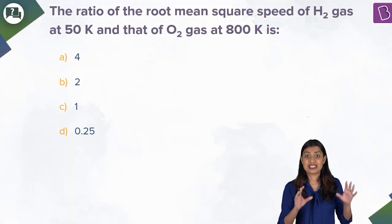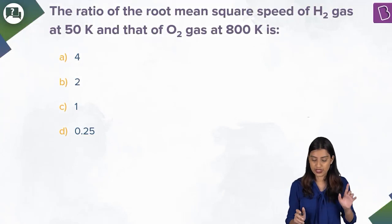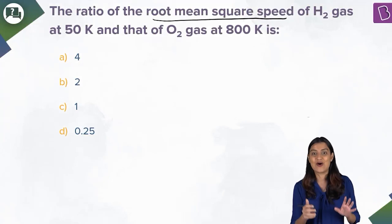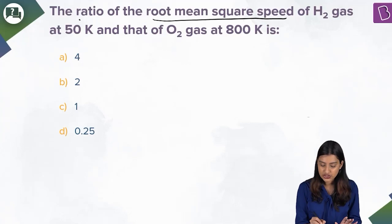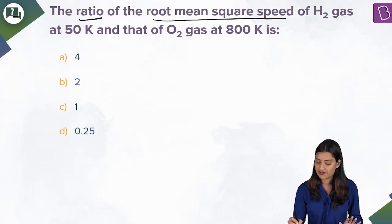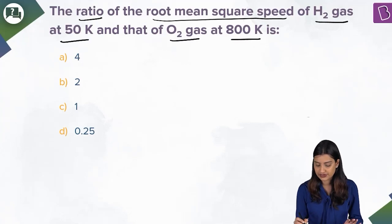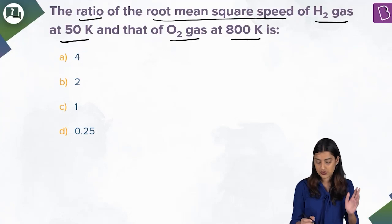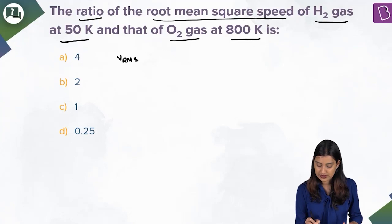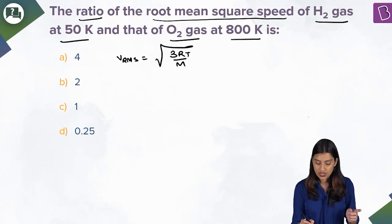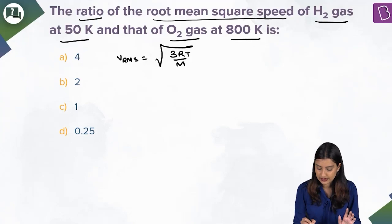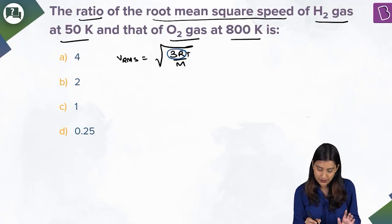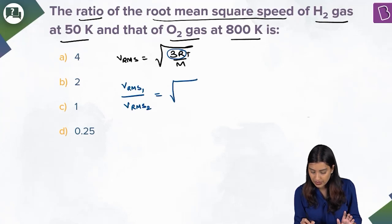Here we have a question from states of matter on the root mean square speed of gases. The ratio of the RMS speed of H₂ gas at 50 K to that of O₂ gas at 800 K is what? The formula for RMS speed is v_rms = √(3RT/M). Since 3R is a constant, the ratio v_rms1 / v_rms2 = √(T₁M₂ / T₂M₁).